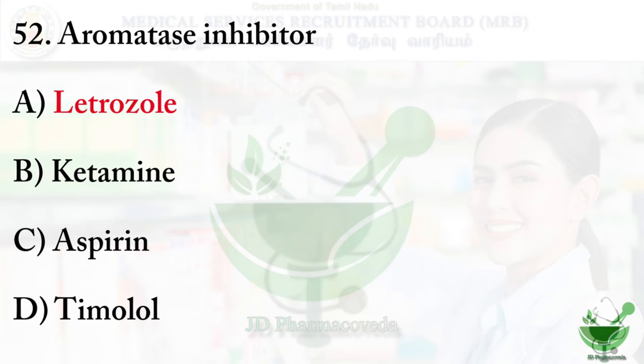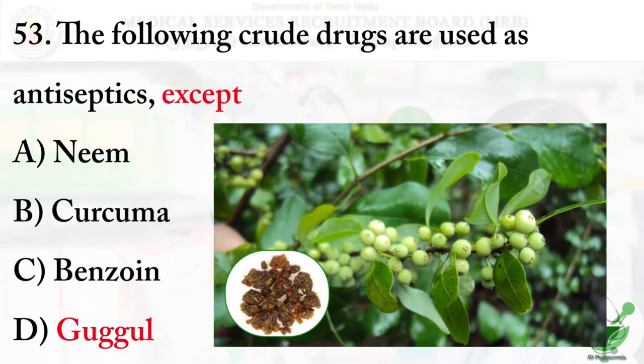Question number 53: The following crude drugs are used as antiseptics, except. Crude drugs are plant, animal, and microbial origin substances that contain natural compounds and undergo processes like collection and drying. The options are: option A, Neem; option B, Curcuma; option C, Benzoin; and option D, Gugul. The right option is option D, Gugul.